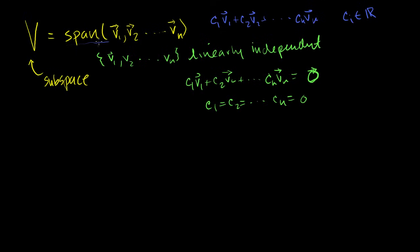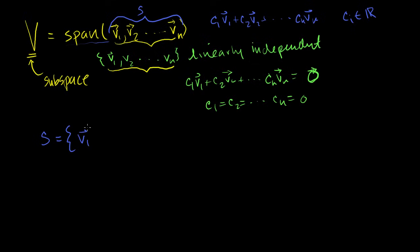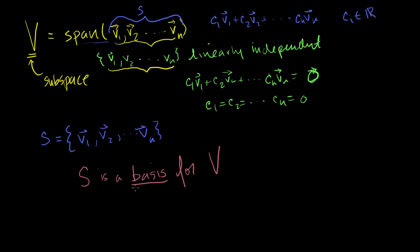If both of these conditions are true — that the span of this set of vectors equals this subspace, and that all of these vectors are linearly independent — then we can say that the set of vectors S, where S = {V1, V2, ..., Vn}, is a basis for V. This is the definition I wanted to make.